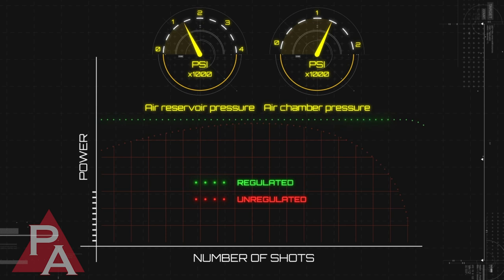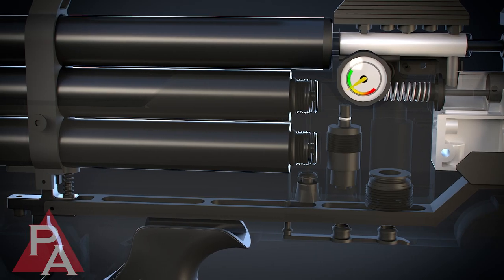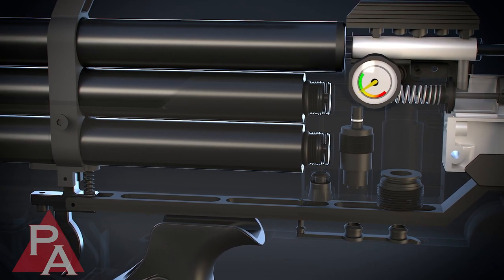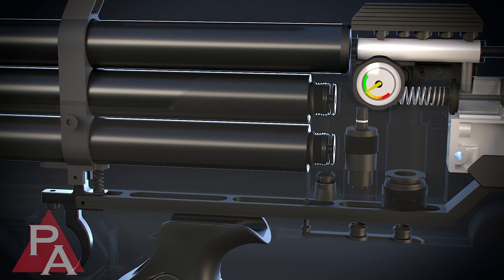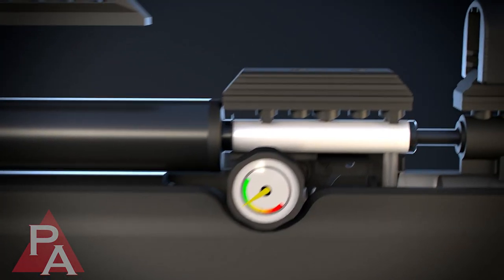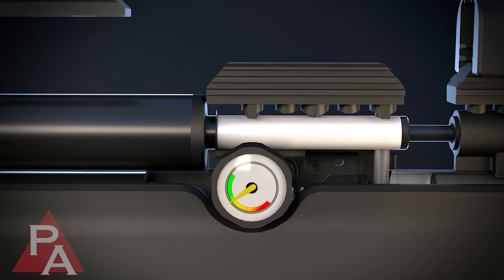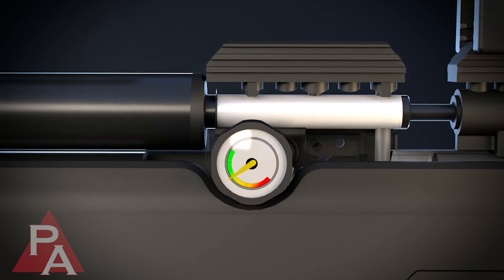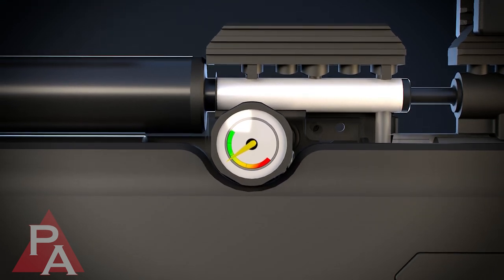It is important not to let the pressure in the rifle's main air reservoir drop below that of the regulator's operating pressure. Otherwise, the regulator effectively becomes redundant in the airflow chain. Many manufacturers now incorporate an additional gauge on their regulated PCPs to specifically indicate the regulator air pressure status.